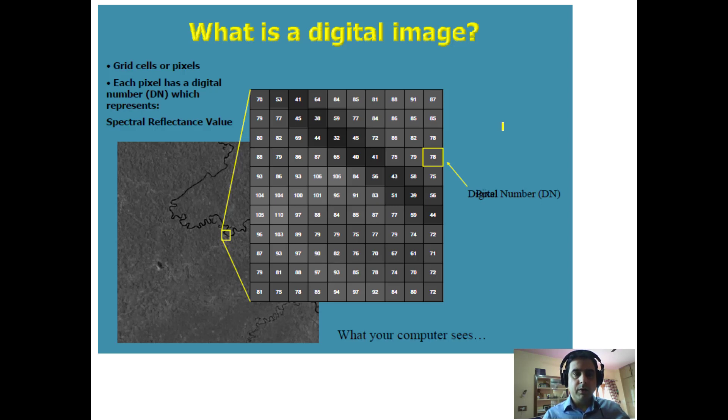Welcome back. Now we will study about a satellite image or a digital image. A satellite image is also called a digital image and is composed of pixels or grid cells. Each pixel has a digital number which represents spectral reflectance value.